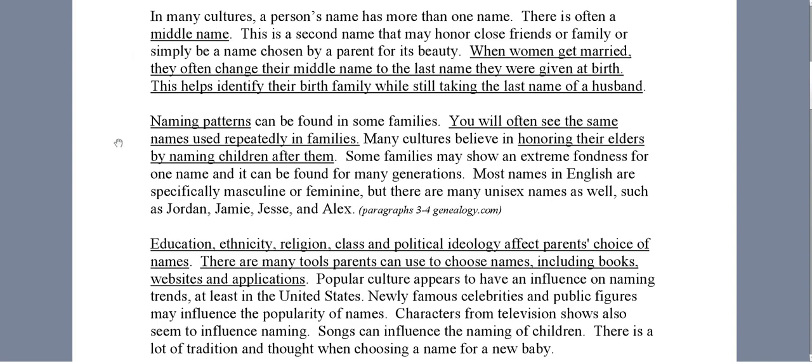Naming patterns can be found in some families. You will often see the same names used repeatedly in families. Many cultures believe in honoring their elders by naming children after them. Some families may show an extreme fondness for one name and it can be found for many generations. Most names in English are specifically masculine or feminine, but there are many unisex names as well such as Jordan, Jamie, Jessie, and Alex.